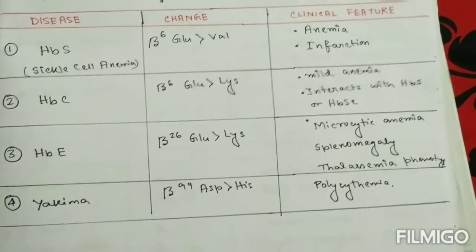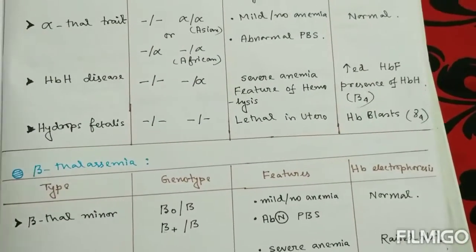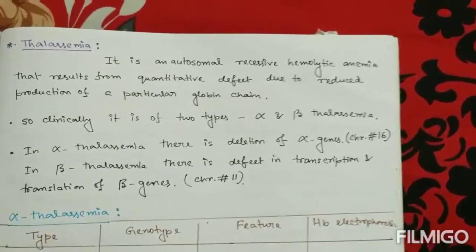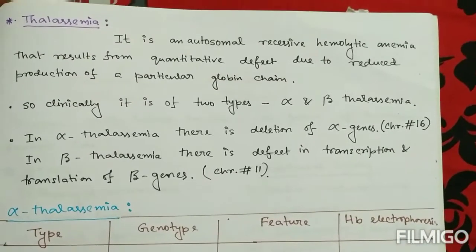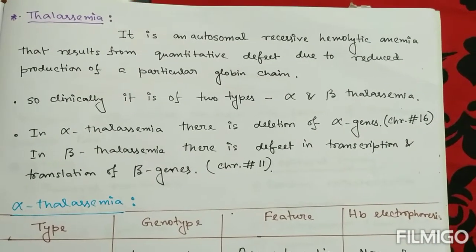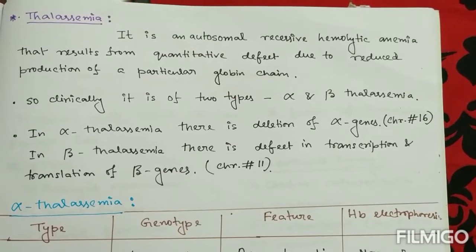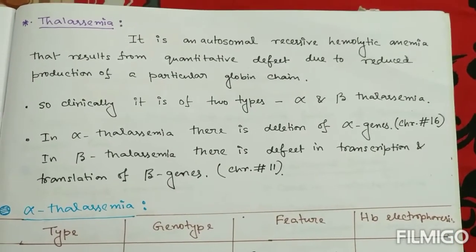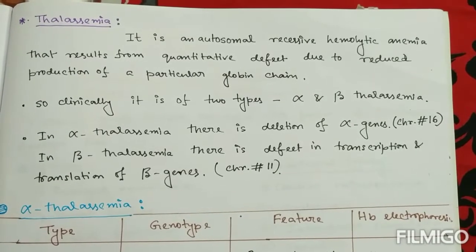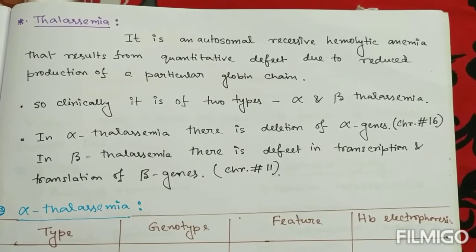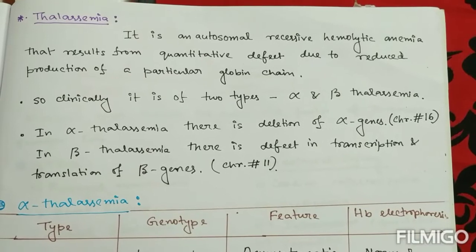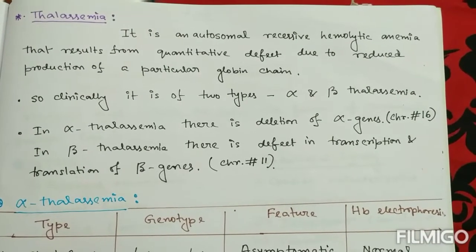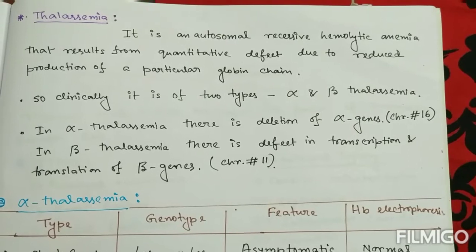Now we will briefly discuss thalassemia. Thalassemia, as you all know, is an autosomal recessive hemolytic anemia that results from a quantitative defect due to reduced production of a particular globin chain. Clinically, it is of two types, corresponding to the two types of globin chains present.